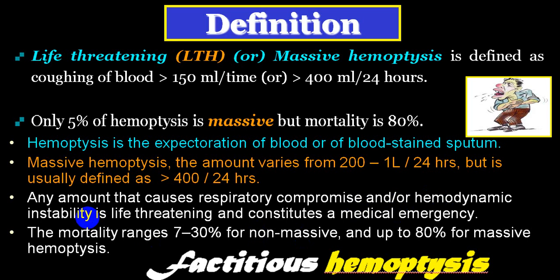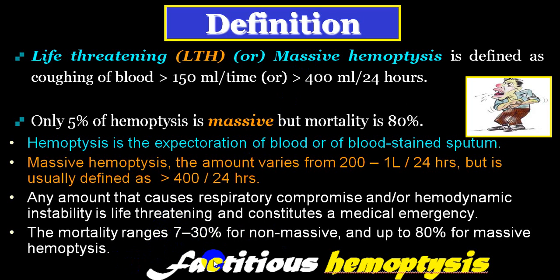This is called hemorrhagic shock and it is an emergency. The mortality rate in the non-massive group is 7 to 30%, but in the massive group it is up to 80% or even more. There is another group where the person does not actually have bleeding but mimics it — we call that factitious haemoptysis.